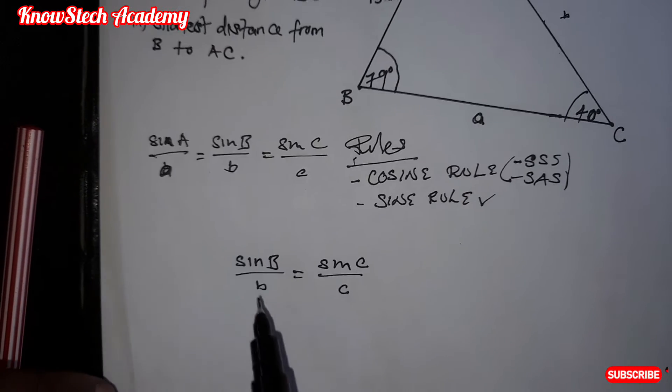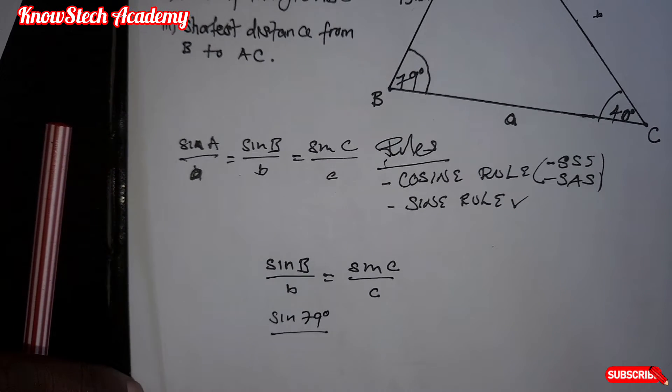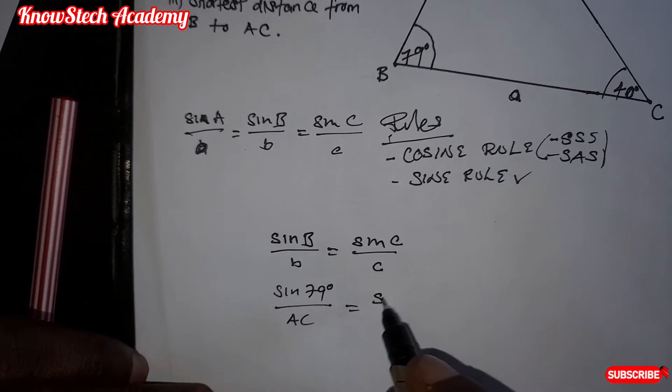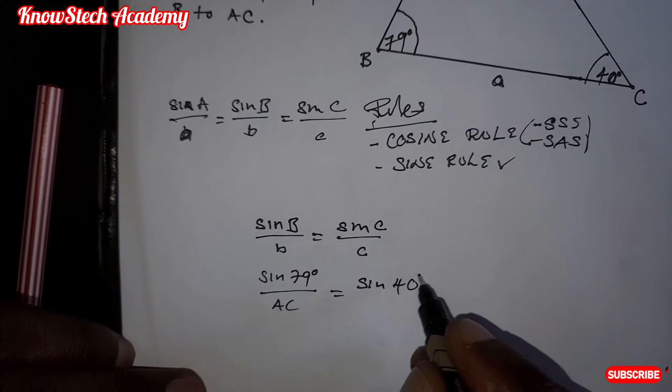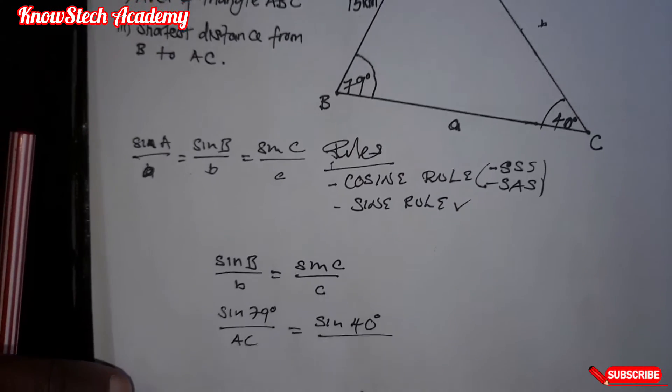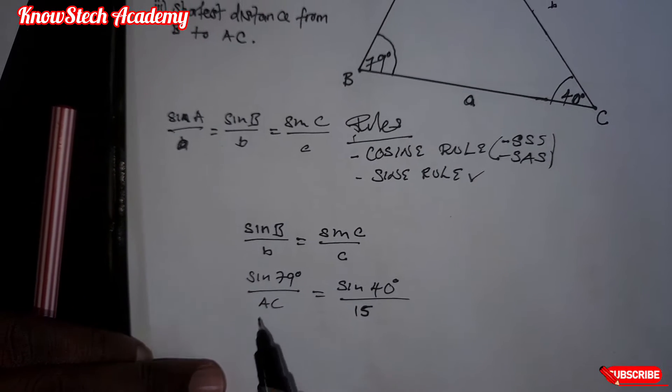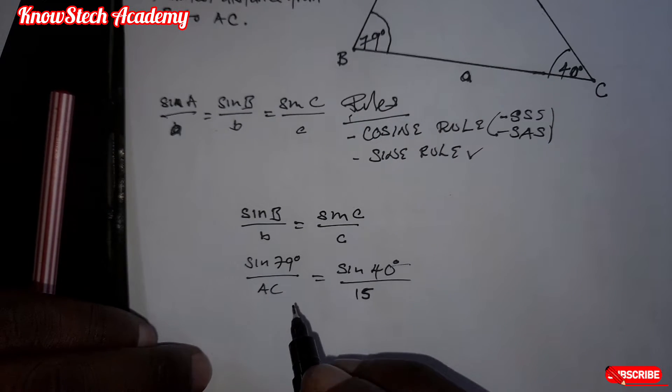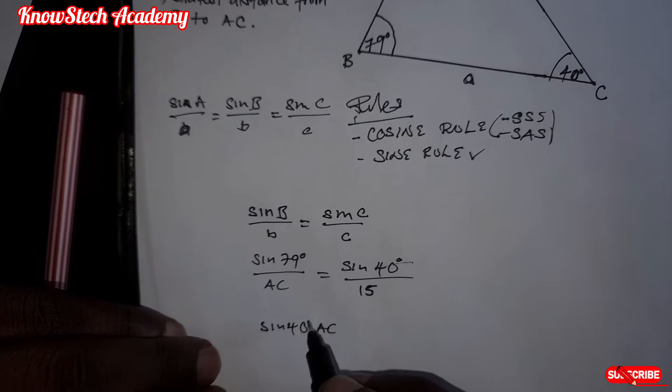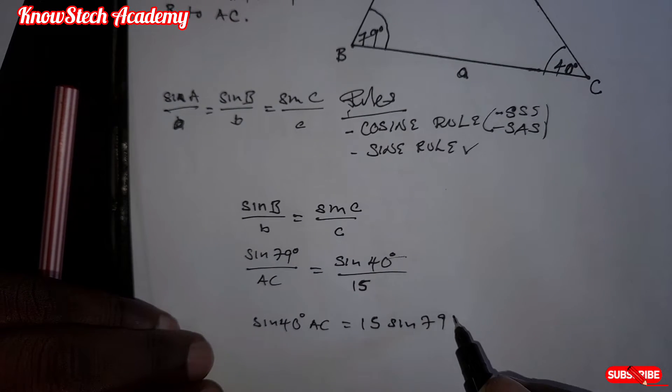Let's substitute what we are given. Sine B, B is an angle which is 79 degrees over side B, which is AC. Is equal to sine C is 40 degrees. Then side C is 15. So we just cross multiply.